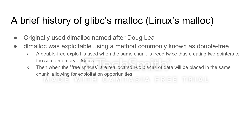Now we're going to talk about the history of glibc's malloc. Originally, malloc used the dlmalloc algorithm named after its creator Doug Lee. dlmalloc was exploitable by a method commonly known as double free — the most basic of the common heap exploits. A double free exploit is when the same chunk is freed twice, thus creating two pointers to the same memory address. Then when the free spaces are reallocated, two pieces of data will be placed in the same chunk, allowing for exploit opportunities.